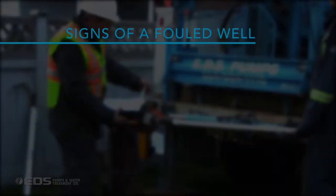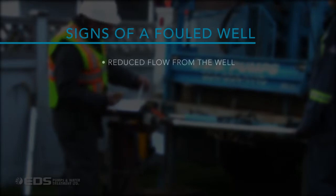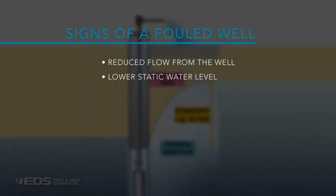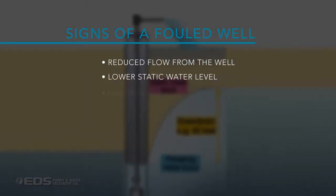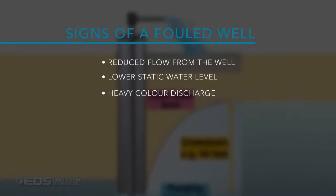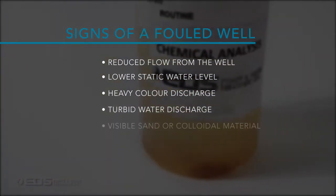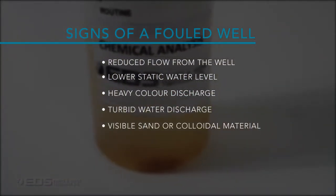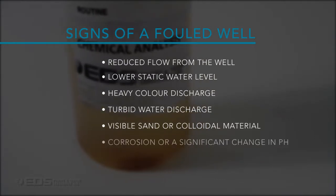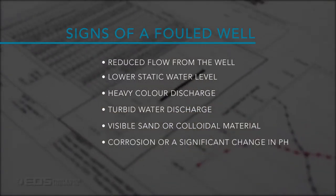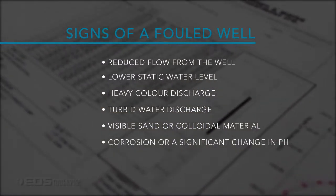Signs that a well is beginning to foul include reduced flow from the well, lowered static water level, heavy color discharge, turbid water discharge, visible sand or colloidal material, and corrosion or a significant change in the pH.